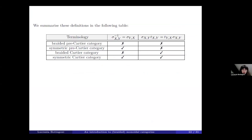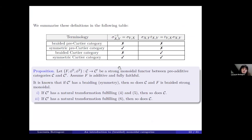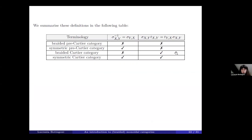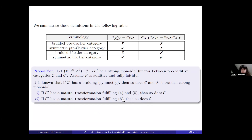In the case of a strict monoidal category, the terminologies are summarized. Moreover, if we have a strong monoidal functor between pre-additive categories C and C', assuming additionally that F is additive and fully faithful, it is a classical result that if C' has a braiding structure, then so does C, and F is a braided strong monoidal functor. This correspondence also holds for the pre-Cartier structure: if C' has a natural transformation T fulfilling axioms four and five, then so does C, and the same holds for the last axiom six.